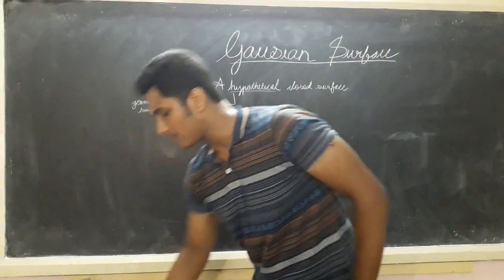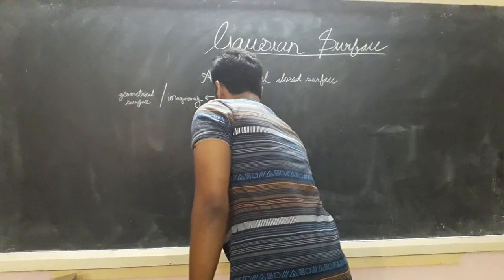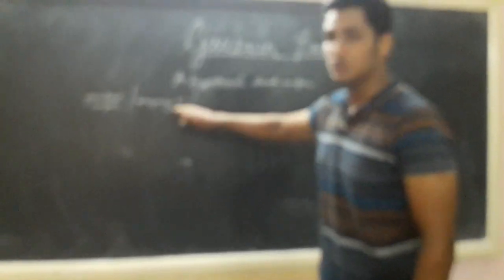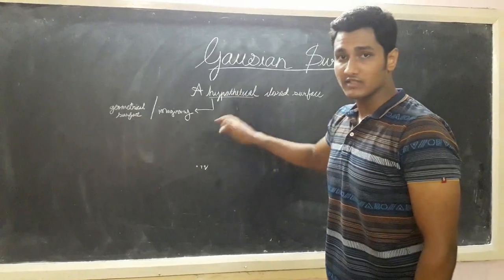Now let us take an example. There is a point charge plus Q, and we have to find electric flux above that point. So now we will assume a hypothetical surface around it.